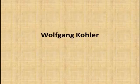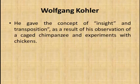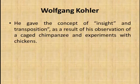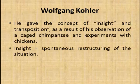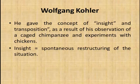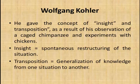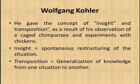Wolfgang Kohler gave the concept of insight and transposition as a result of his observation of a caged chimpanzee and experiments with chickens. Kohler locked a chimpanzee in a cage and placed pieces of food outside. Through this, the process of insight emerged — insight is the spontaneous restructuring of a situation. Using sticks, the chimpanzee arranged them to pull the food toward itself, demonstrating transposition.